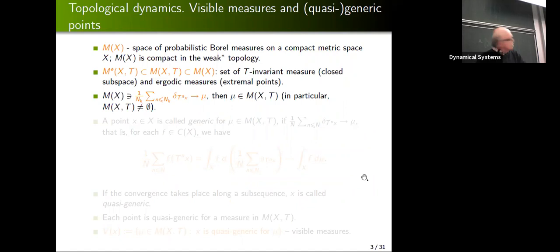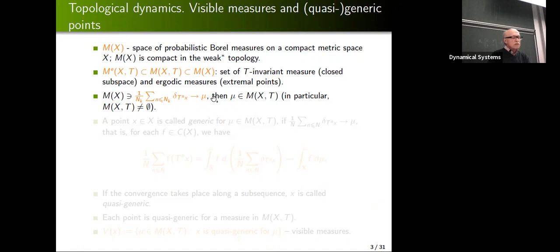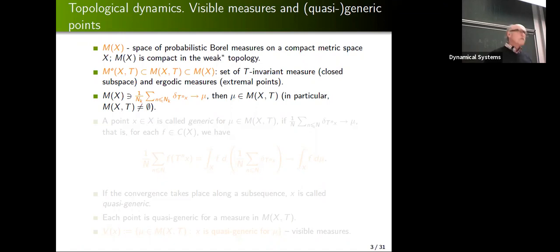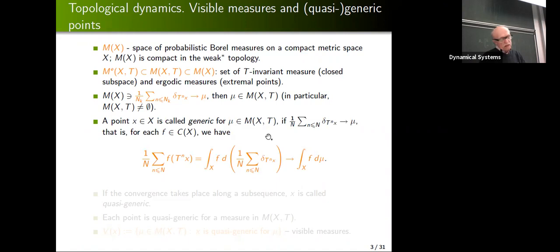Now, topological dynamics and visible measures: M(X) is the space of probability Borel measures equipped with the weak-star topology. The ergodic invariant measures — this is very standard. One way to prove that this set is non-empty is to take so-called empiric measures. In other words, I fix a point in my space, look at its orbit, take a finite piece of the beginning of this orbit, then average, and when we pass to the limit we obtain an invariant measure.